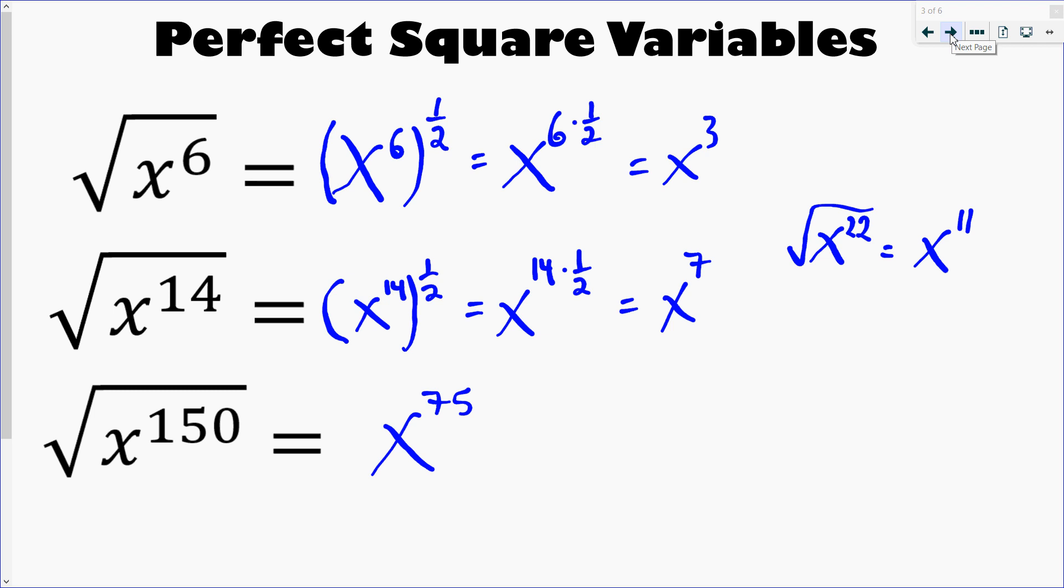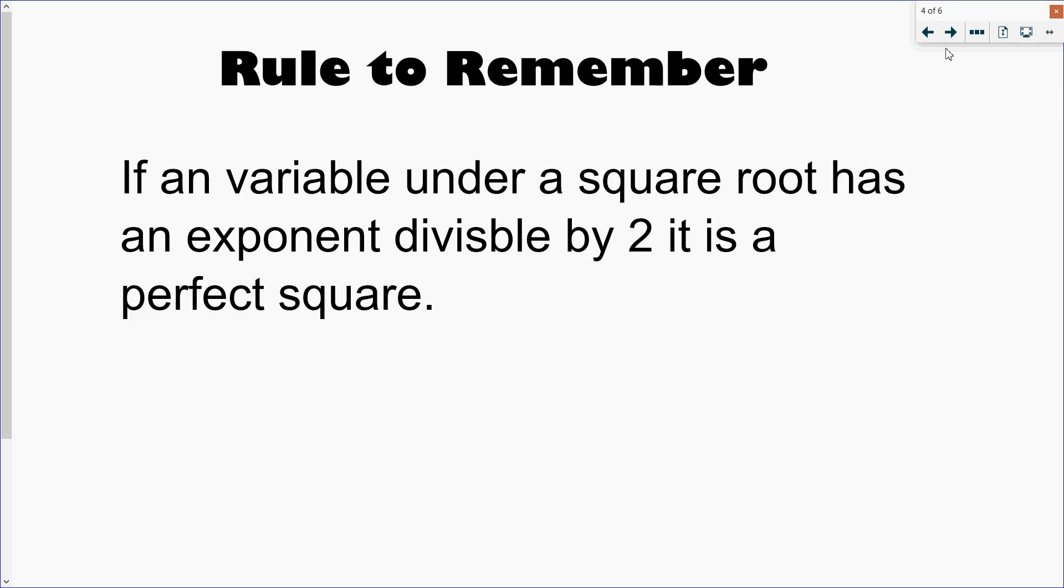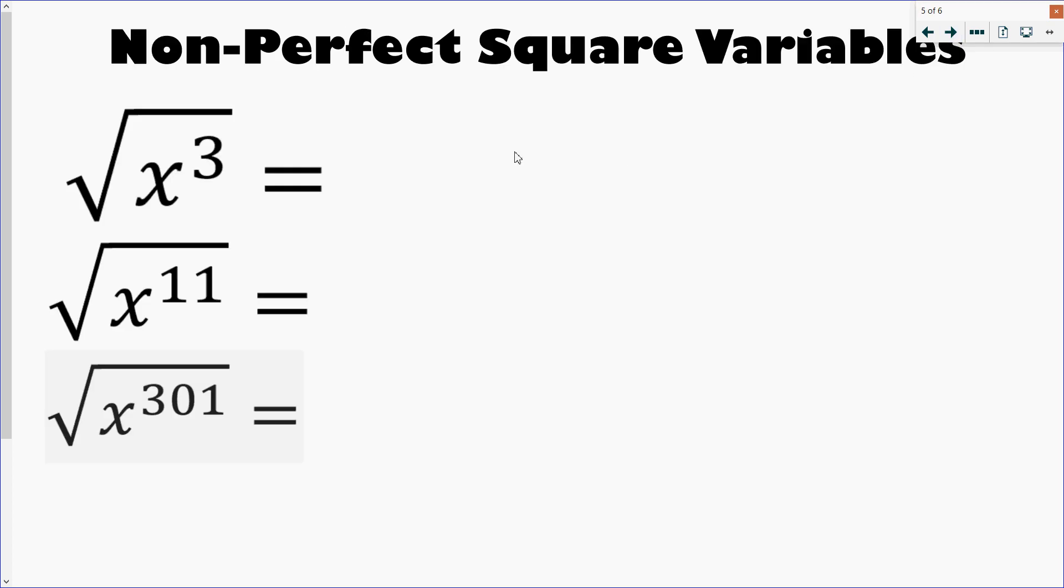Now what happens if you get something that's not perfect? So here's the rule: if a variable under a square root has an exponent divisible by 2, it is a perfect square. So there's my rule. All right, so let's try a few of these non-perfect squares.